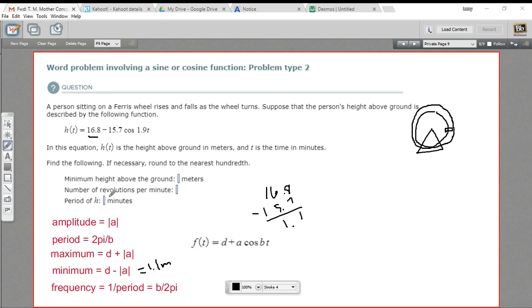Okay. The next part here says the number of revolutions per minute. That is the frequency. So we need to find the period and then take 1 over the period or the reciprocal of the period. And we need to find the period for part three anyway.